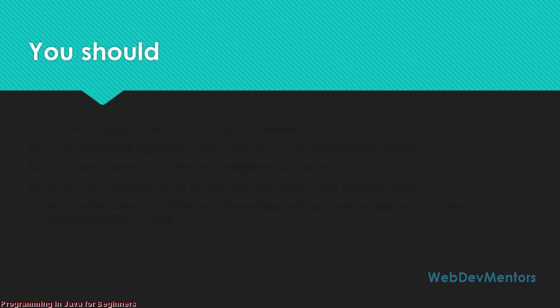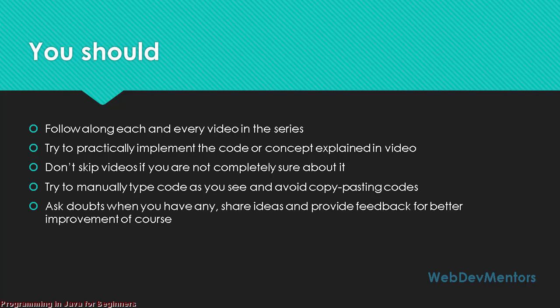What you should do is try not to skip videos. Follow along each and every video, do things practically, implement the code, and get the outputs. Don't skip even a single video, because at some point you'll feel something is missing. Also, try to manually type all your code — no code will be provided on GitHub or anywhere else. This is to encourage you to type code, make mistakes, find solutions, and learn programming more deeply. Spotting errors is difficult at first, but once you start doing it, learning programming becomes much easier.